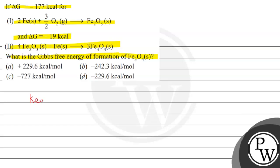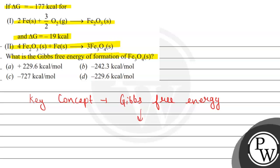First of all, let's look at the key concept of this question. What is the key concept of this question? That is the Gibbs free energy. The Gibbs free energy is basically a free energy, and it is said that it is the maximum free energy that can be converted into useful work — that represents the Gibbs free energy, which we represent as G.